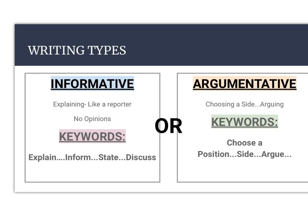Whenever you're given a prompt and you read all the way through it, you're going to get to the command sentence: 'write an essay.' The keywords you are looking for are explain, inform, state, or discuss. If you see those words, then you know this is informative — you are merely giving information.